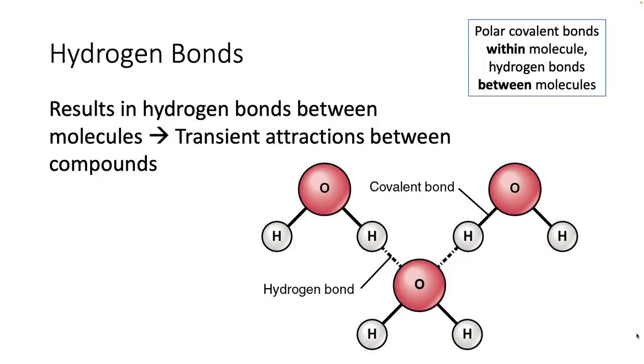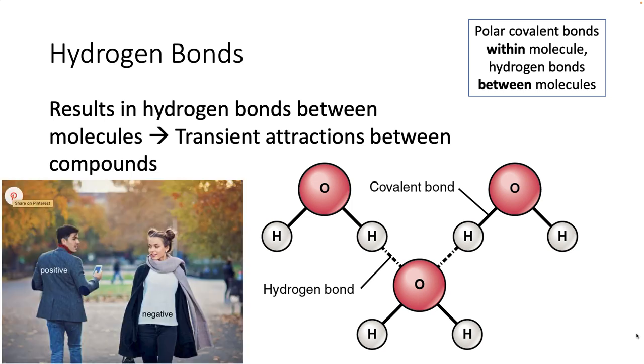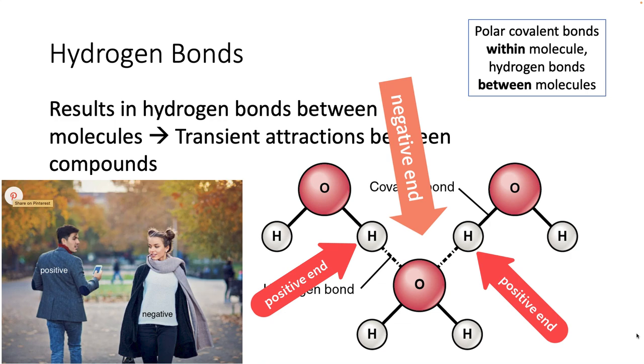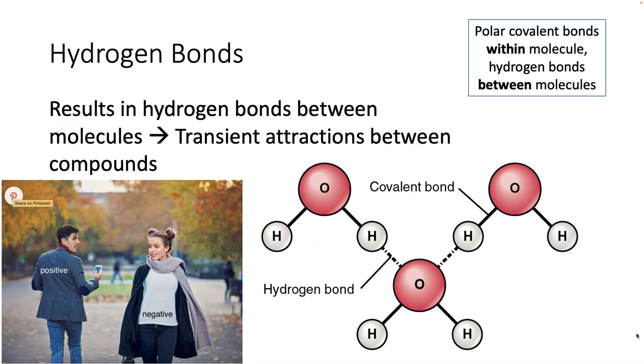So what does this actually mean? These partial charges that we see on the ends of polar molecules can result in something called a hydrogen bond. And a hydrogen bond is just when you have an attraction between the positively charged end of one molecule and the slightly negative end of another molecule. And those two things, the positive and the negative, are attracted to one another. Now this is just a transient attraction, and we draw it with a dotted line to show that it's not really a bond.